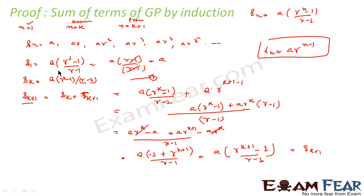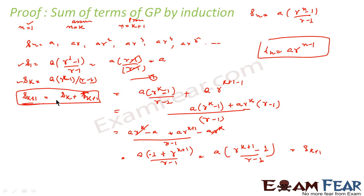To summarize the induction proof: we proved s of 1 is true, assumed s of k equals a times (r to the power k minus 1) by (r minus 1) as equation 1, then used s of k plus 1 equals s of k plus t of k plus 1 and solved to get the result.